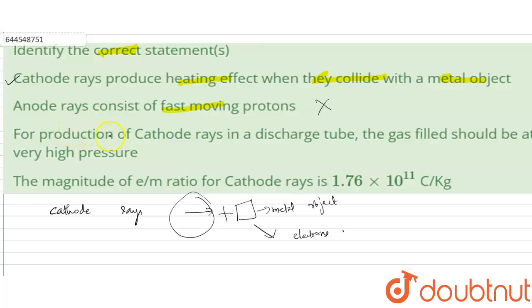Third option: for production of cathode rays in a discharge tube, the gas filled should be at very high pressure. However, for the production of cathode rays in a discharge tube, the conditions are the gas fill should be at very high temperature and low pressure. So this option is also not true, false.